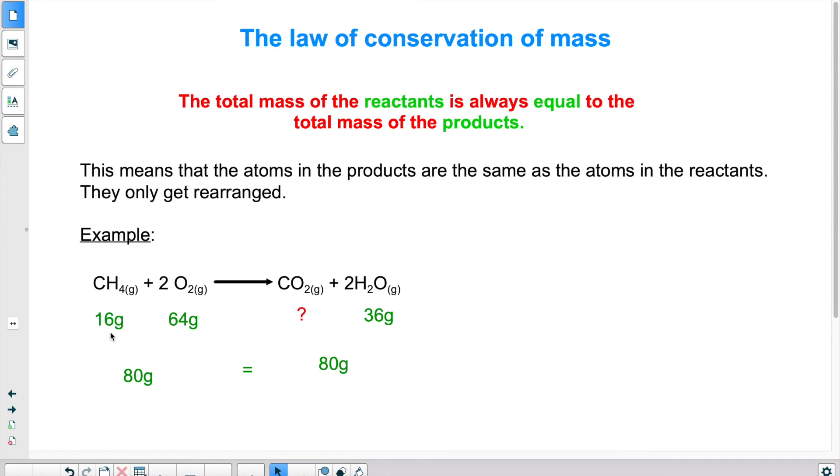So if I have, for example, 16 grams of the first substance and 64 grams of the second substance, I know that the total amount of atoms, the mass of the total amount of atoms, is 80 grams. At the end of the reaction, I should still have 80 grams of atoms, because it's the same atoms that got redistributed to make new substances.